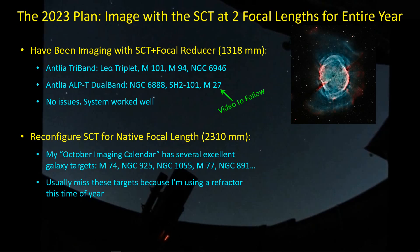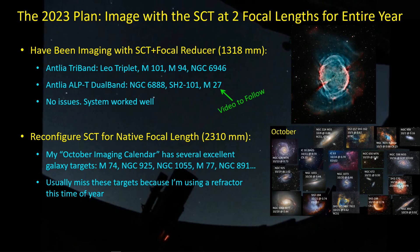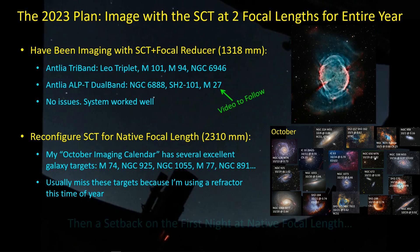Usually when I'm imaging in October, I'm using my refractor and I end up missing some pretty good targets. My imaging calendar during October has some nice targets that are optimally placed — like M74, M77, and NGC 891 — targets that are really only suitable for the SCT at its native focal length. So I wanted to hang around with this scope, use it for the rest of the year, and try to capture some of these targets that I just miss. Then I had a problem on that first night when I started using it.